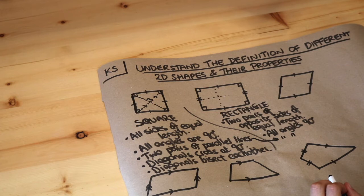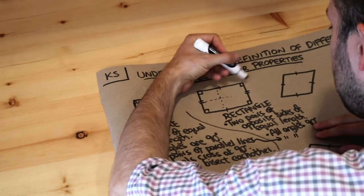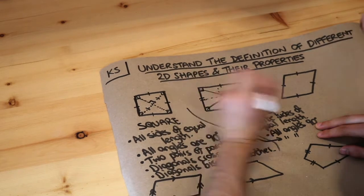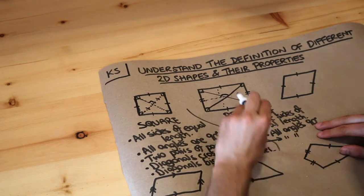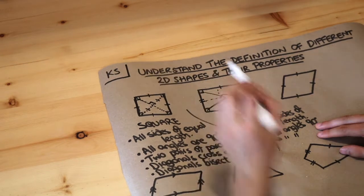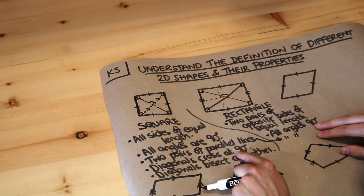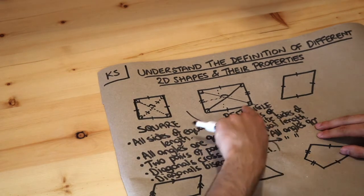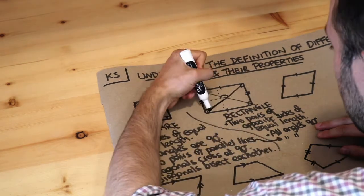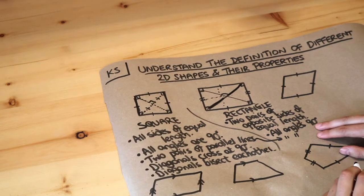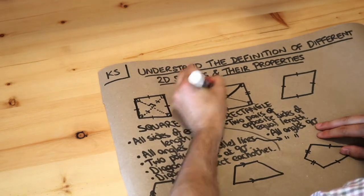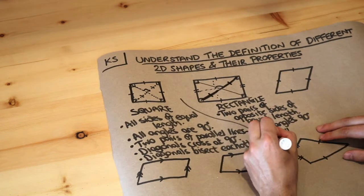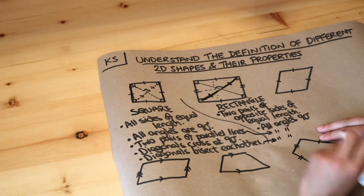If we look at the diagonals of the rectangle, this angle here is not a right angle — you can see it's actually obtuse, a bit more than 90 degrees. So it is not true that the diagonals cross at 90 degrees. However, it is true that the diagonals bisect each other: this length is equal to that length, so the diagonals do bisect each other.